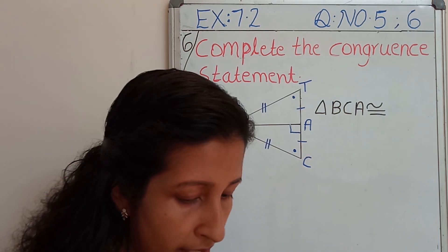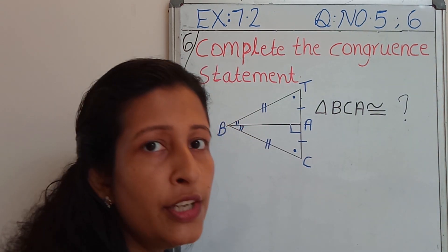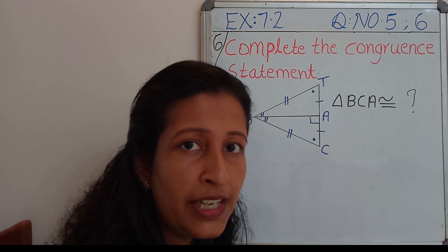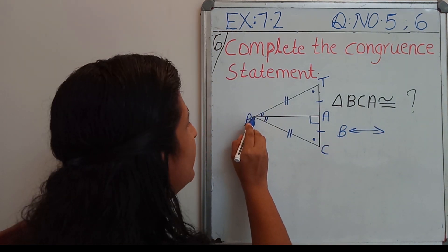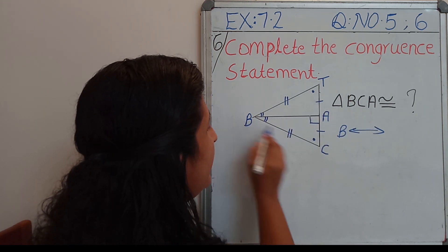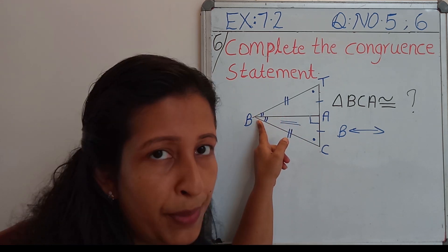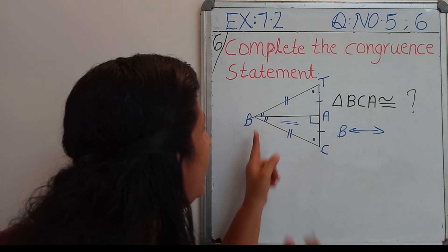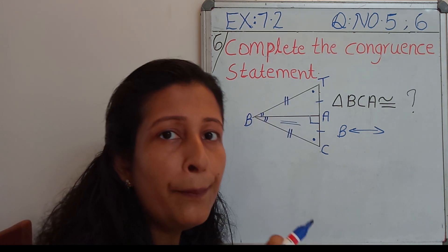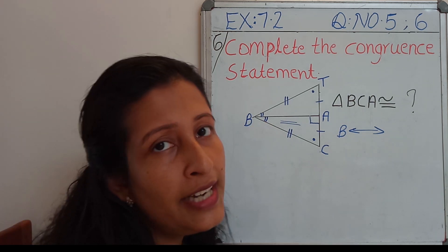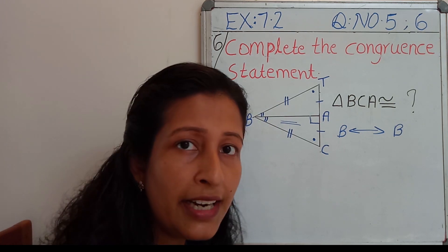The next question is question number six: complete the congruence statement. They have given triangle BCA is congruent to what, and we are going to find that out. In the same way as we did in the previous problem: B is corresponding to — in triangle BCA, angle B is marked by two lines, and in the next triangle B is also marked by two lines.